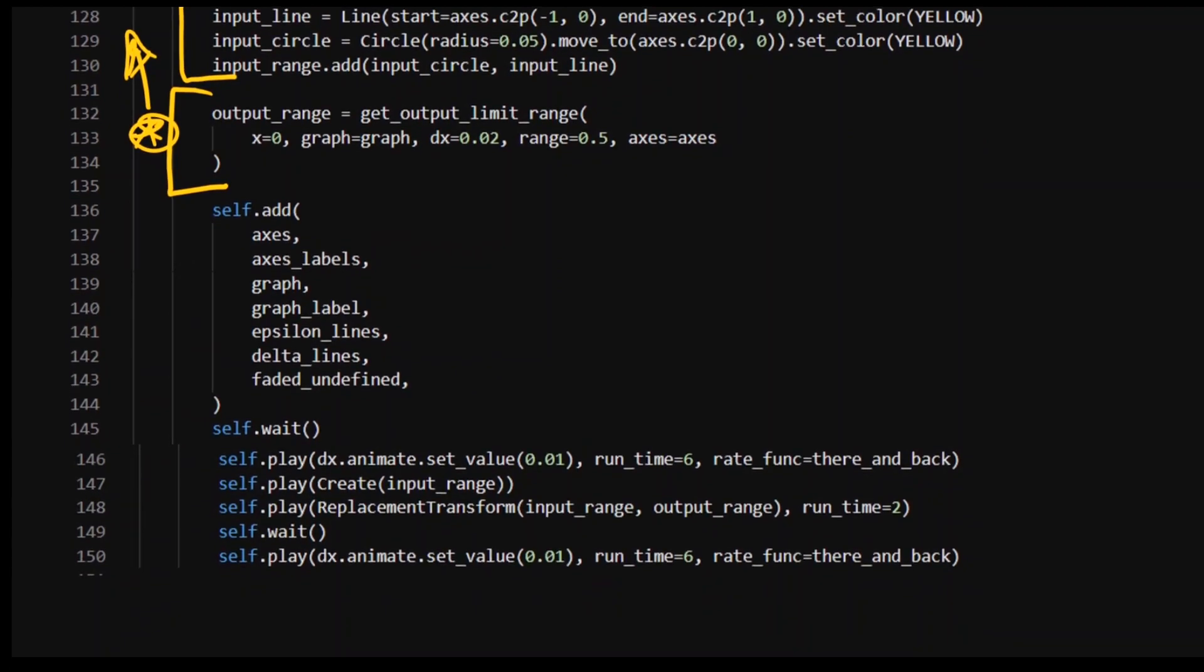And really, this is all we're doing. We add everything on, we wait, and then we play the value tracker. Animate it, set the value, go there and back.